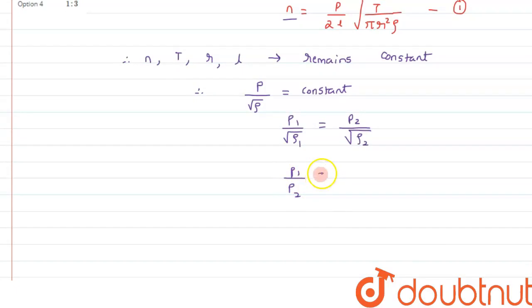And as per the given question, we have been given that rho 2 or p2 is four p1.